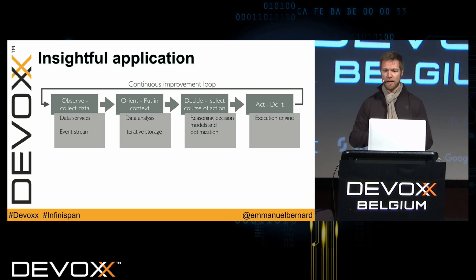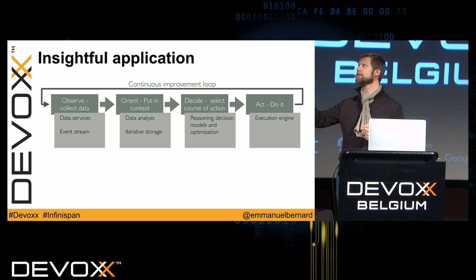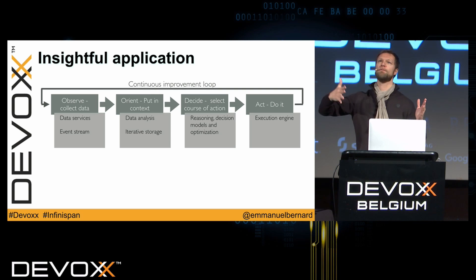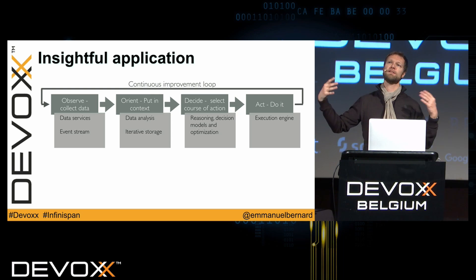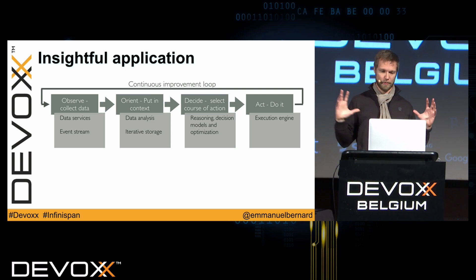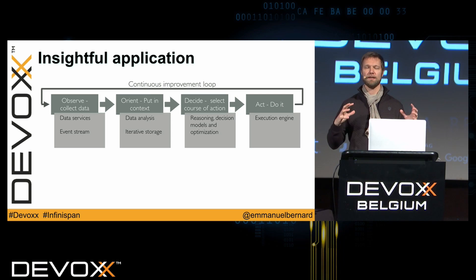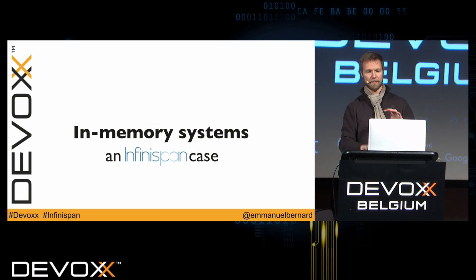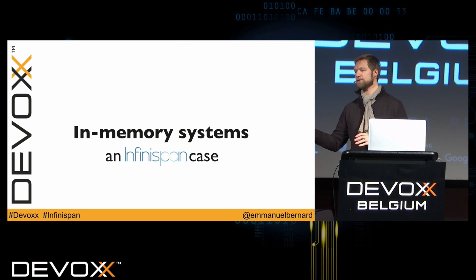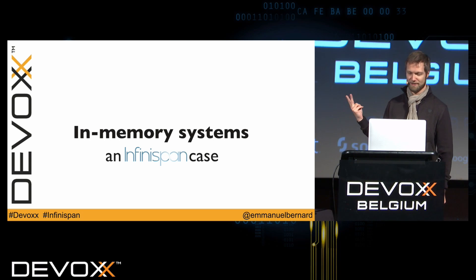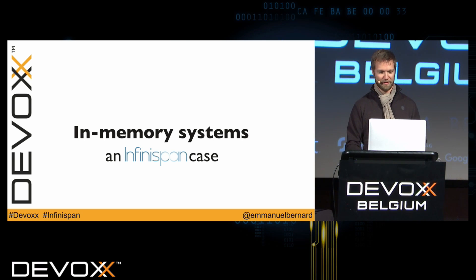An application doing things and getting input from users will generate more data — that's the feedback loop we're talking about. Today there are a lot of manual steps, but we're trying to squeeze that into a shorter cycle and make it easier. From now on I'm going to focus on what in-memory systems can do for you, and I'll use Infinispan as an example — partly because that's the one I know, and partly because I think it's awesome. I'm totally objective on that.